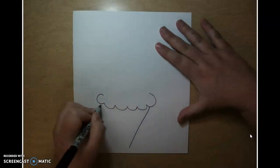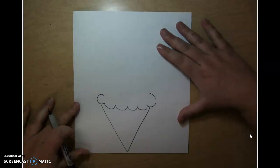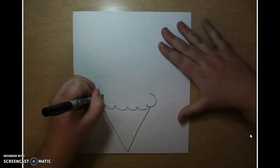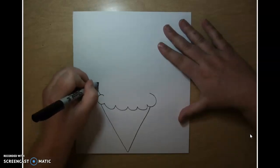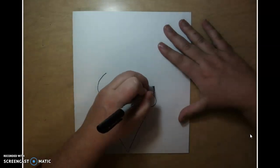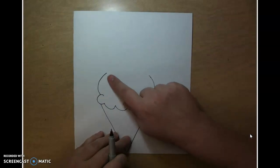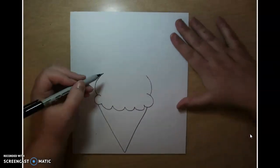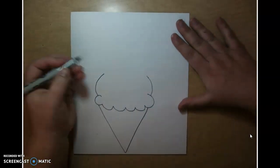Underneath, we're going to make the cone. Then we're going to go from here, from the side, and we're going to curve it up. Do the same on the other side. But we're not going to connect it with a line. We're going to draw the bottom part of the next scoop.